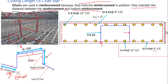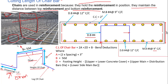B = 50 × dia of the chair bar. The dia of the chair bar we are using here is number 4. Now for the cut length formula: Cut Length = 2A + 2D + B − bend deductions. Where A = 2 × spacing of main bar at bottom + 3 inches, B = 50 × dia of bar, and D = height of chair.